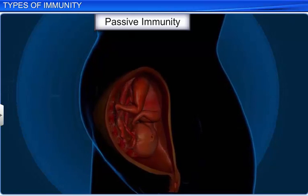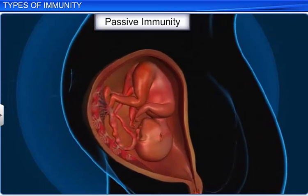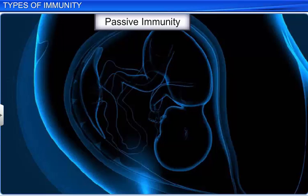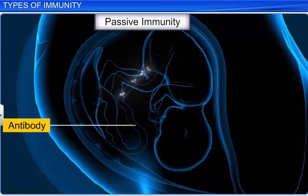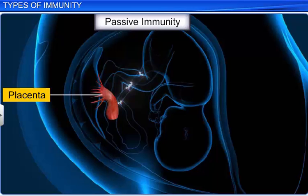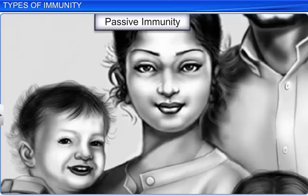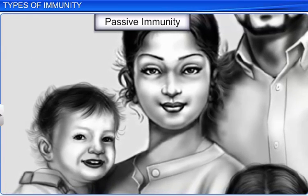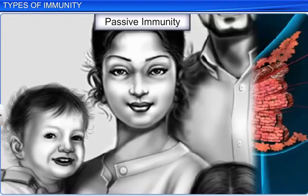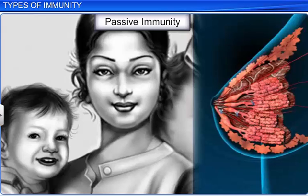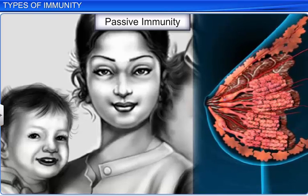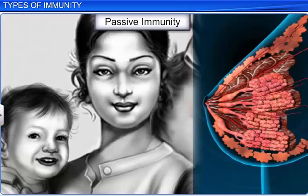On the other hand, passive immunity comes into play when ready-made antibodies are delivered directly into the body from external sources, to protect it against foreign agents. The antibody that a fetus receives from its mother through the placenta during pregnancy is an example of passive immunity. Likewise, during the initial days of lactation, mother's milk contains a yellowish fluid called colostrum, that has copious amounts of the antibody IgA. Therefore, mother's milk also provides passive immunity to babies.